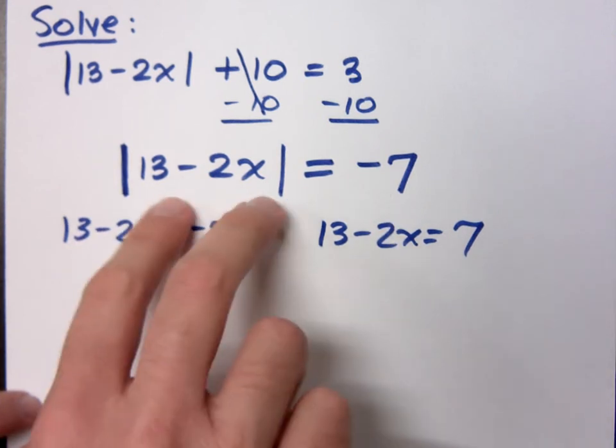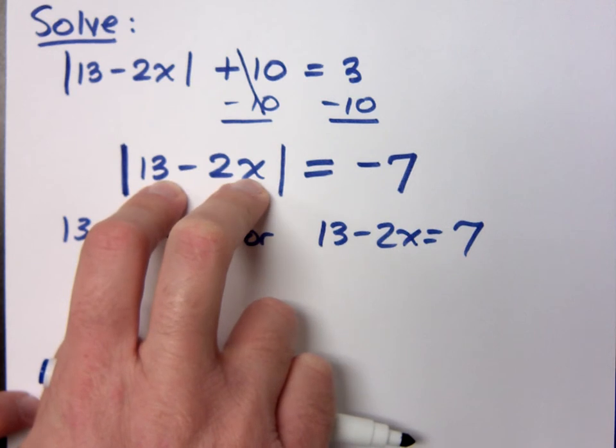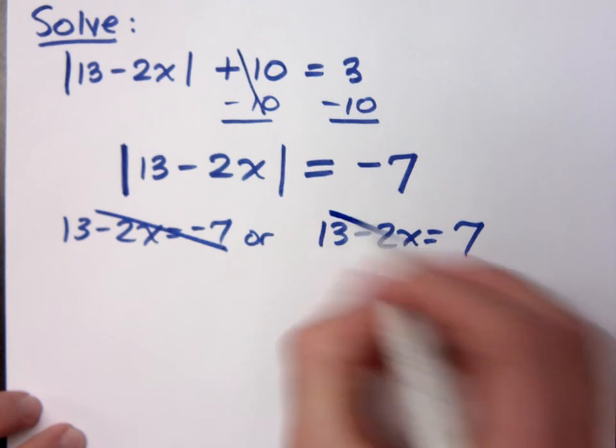What we have here is this. Check this out. The absolute value is supposed to return what? Positive. How can the absolute value equal a negative? It can't. This doesn't even apply.